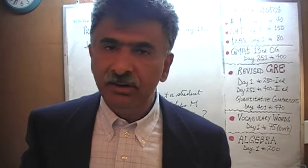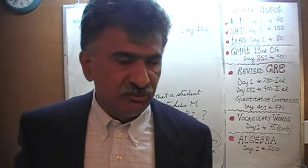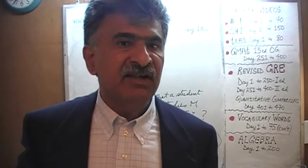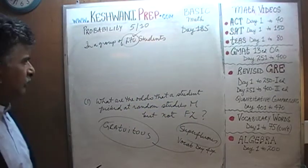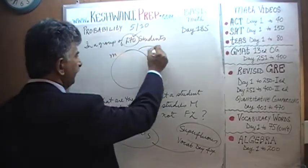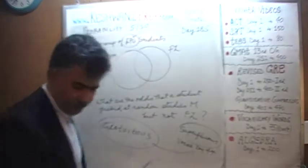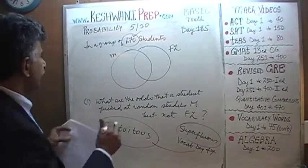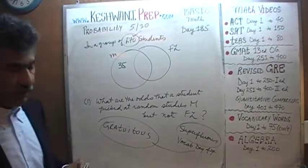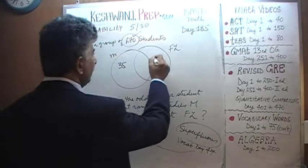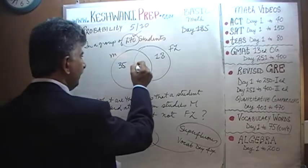The fact that there are 270 students plays absolutely no role because nobody is asking us how many students study music or foreign language — they are asking us what are the odds. When talking about odds, the absolute number plays no role. Just ignore it. Here is our music circle and here is our foreign language circle. We are told that 35 students study music and 18 study foreign language. Then they tell us that 7 of them study both.